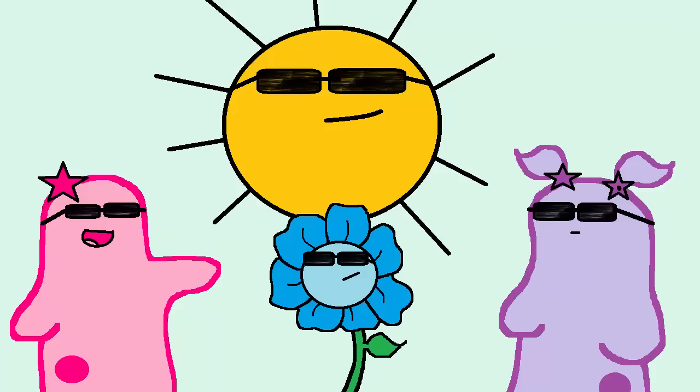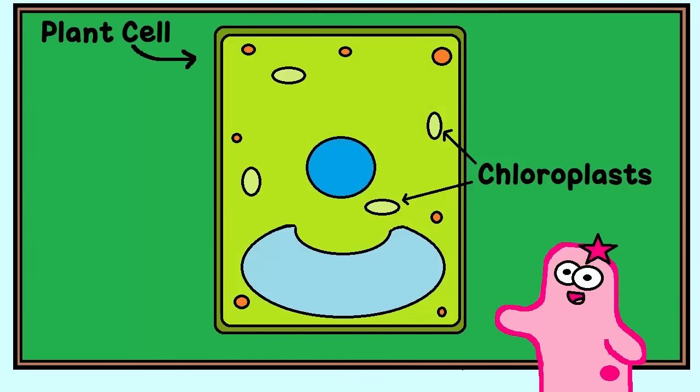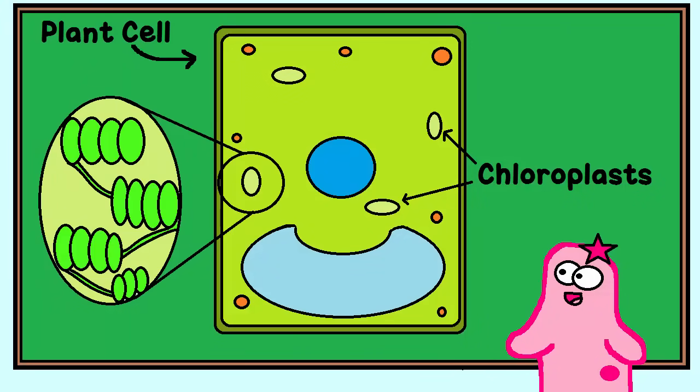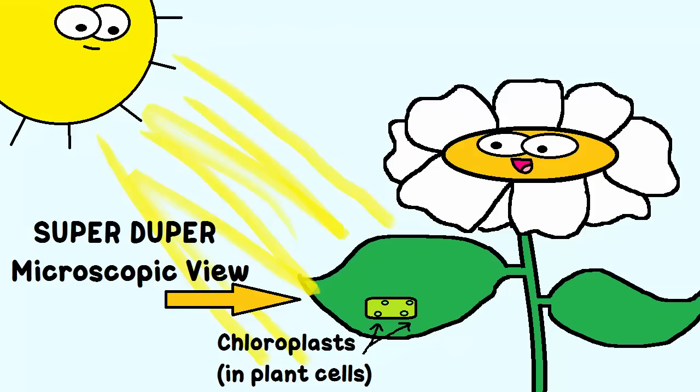Starting with the sunlight, how does plant structure deal with that? Well, plant cells have organelles called chloroplasts. They are the site of photosynthesis, so they help capture light energy for the process of photosynthesis.